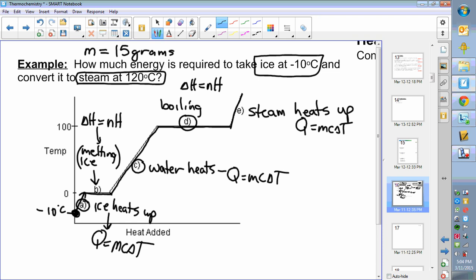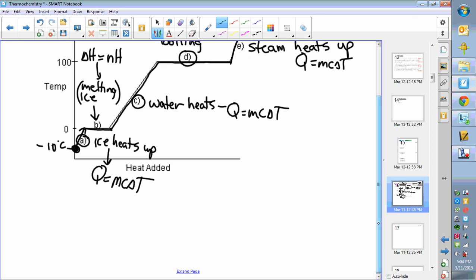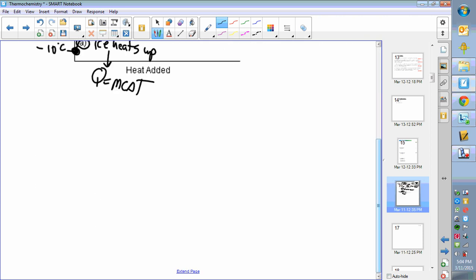Let's break this up into each of our sections and use the constants as we need them from our tables. So our first section that we're dealing with was part a, where it was ice at negative 10 becoming ice at zero degrees celsius. That's temperature change, so we're dealing with q is mc delta t for our quantity of heat.